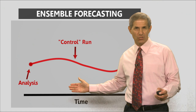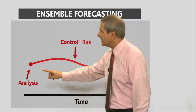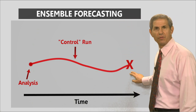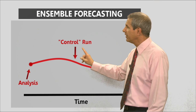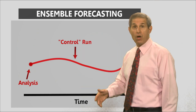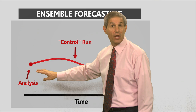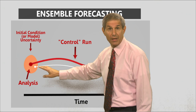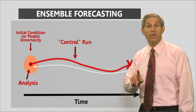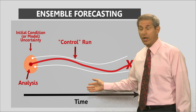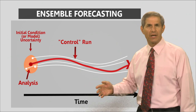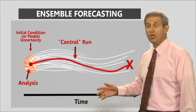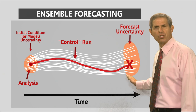Think of ensemble forecasting this way. Say this point represents the initial state of our model. We run the model, and at some future time, we get a forecast — we'll mark that with an X. This first run of a model is often called the control run. Now we know the initial condition isn't perfect, and we also know the model isn't perfect. So we change the initial condition by a very small amount, or we change the model by a very small amount, and we run it again. Then we tweak a second, third, and fourth time, running it again each time — and repeat a bunch of other times — producing a group or ensemble of forecasts.